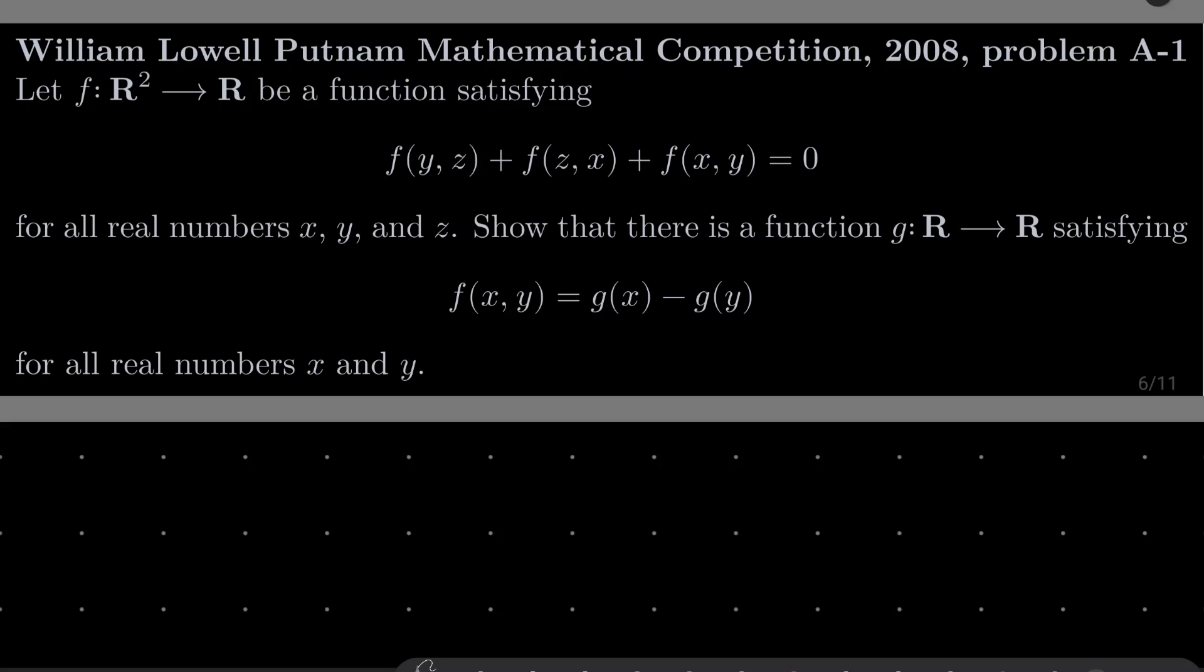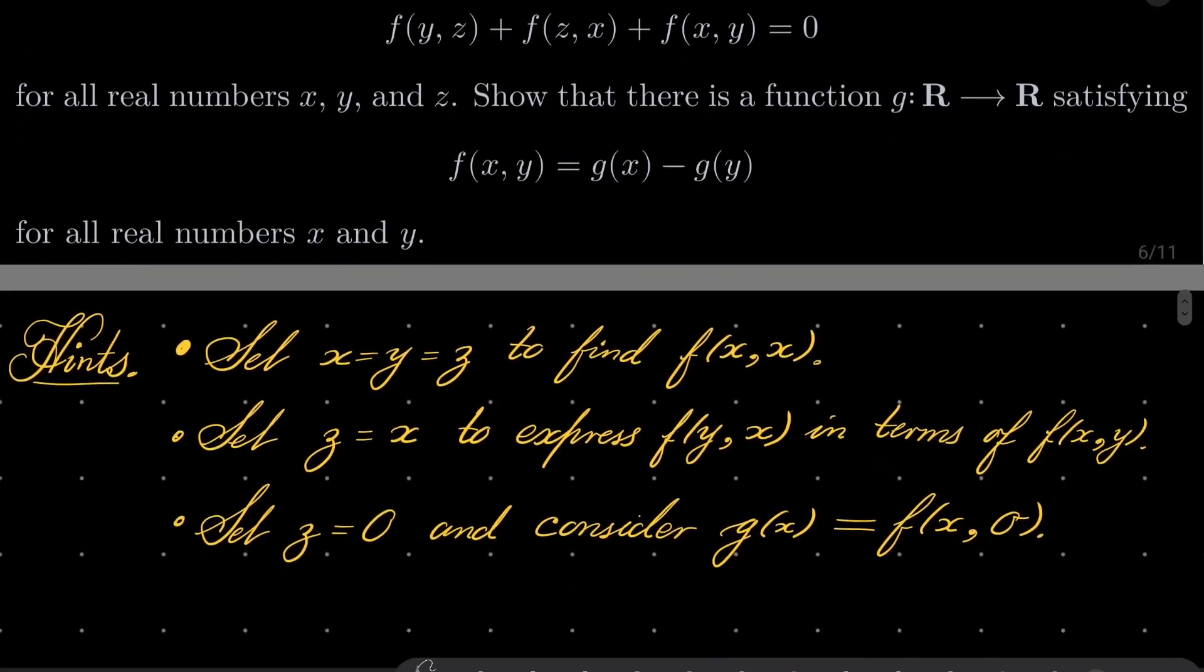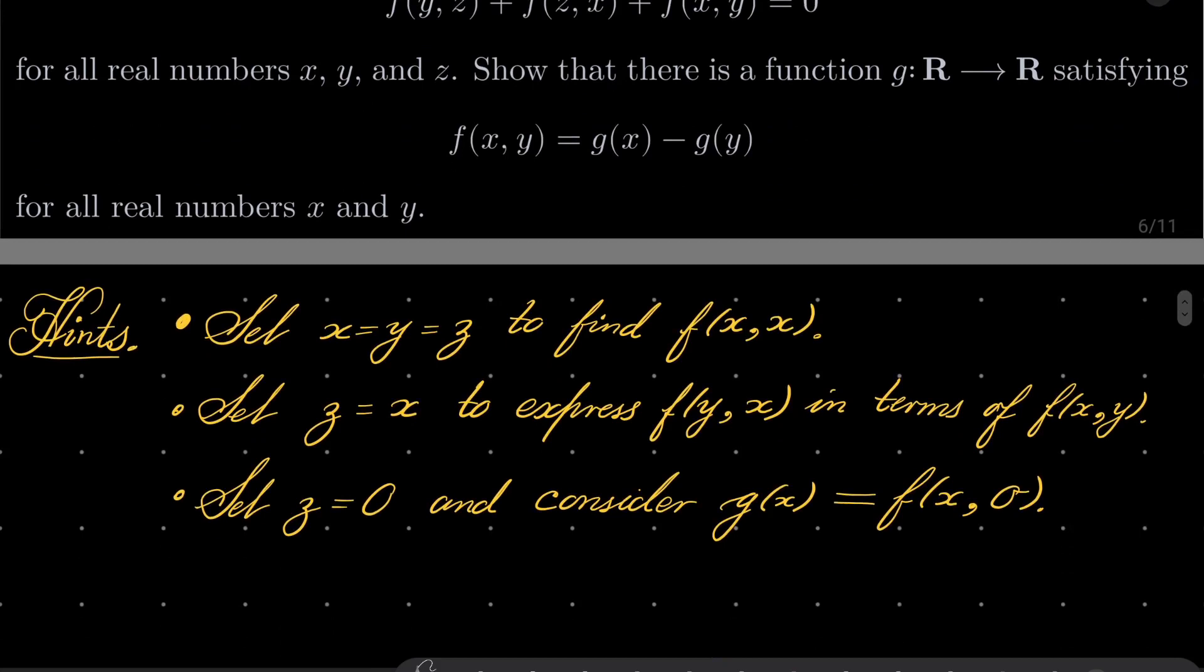So it's a very simple problem. Here are my hints. First set x, y and z to be the same to find f of xx. Then set z to be x to express f of yx in terms of f of xy, so we can change the arguments. And finally set z to be 0 for example and consider g of x which equals f of x 0. And that should lead you to the solution. Give this problem a try.